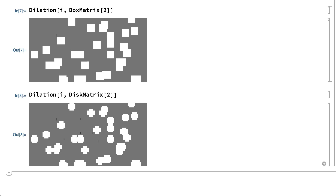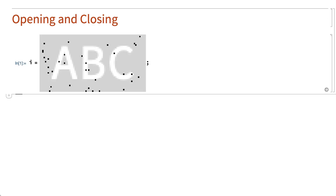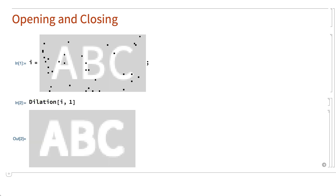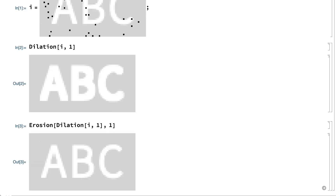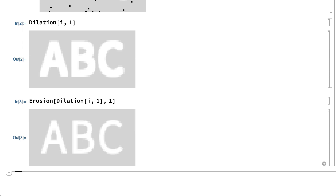Dilation is called dilation because it tends to enlarge or dilate the white parts of an image. For example, dilation applied to this image not only removes the black noise pixels, but also makes the white letters in the image larger and thicker. To restore those letters to their original size, and for a variety of other purposes, it is common to follow dilation with erosion, which in this example has the effect of removing the noise without changing the sizes of the shapes in the image.